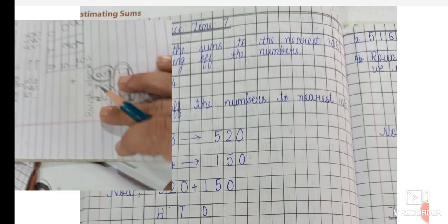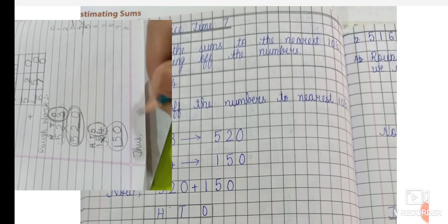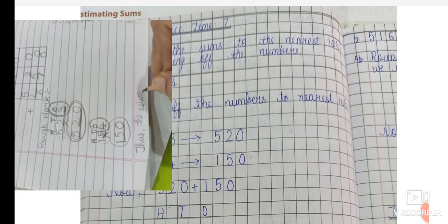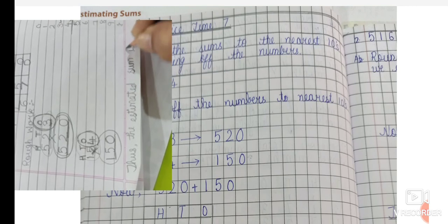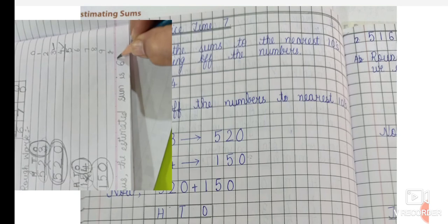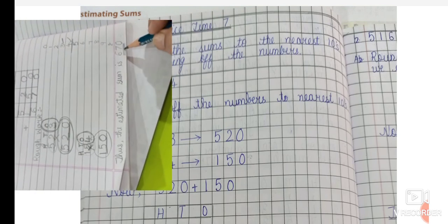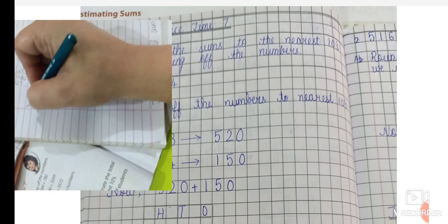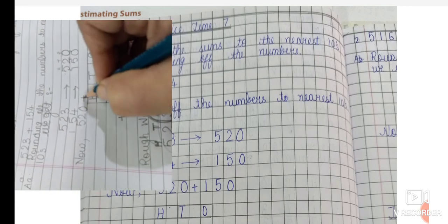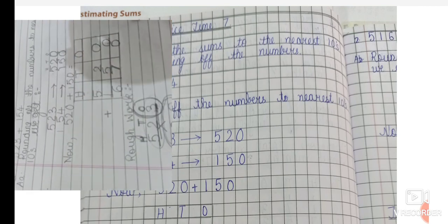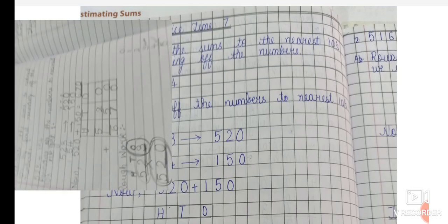Thus the estimated sum is 670. So you will write: 520 plus 150 is equal to 670. This is the number — the estimated sum is 670.